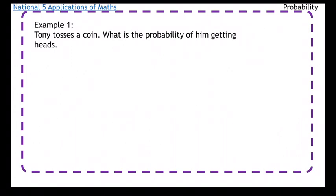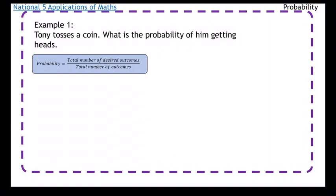Tony tosses a coin. What is the probability of him getting heads? So the formula I used before was the number of desired outcomes over the total number of outcomes. So if you think about a coin, so there's the formula. So a coin has got one head on it.